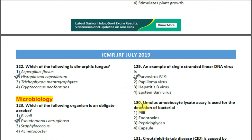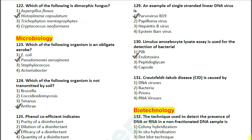Question number 130: Limulus amebocyte lysate assay is used for the detection of bacterial — options: 1. pili; 2. endotoxin; 3. peptidoglycan; 4. capsule. The correct answer is option 2 — endotoxin, also called the lipid A portion of LPS (lipopolysaccharide).